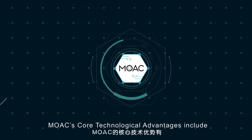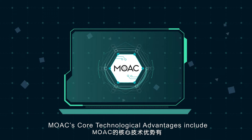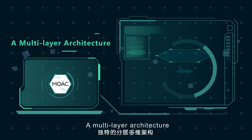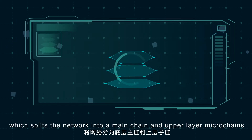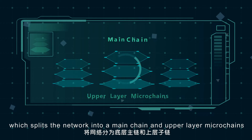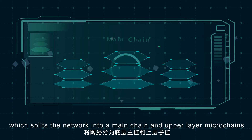The developer team is composed of many senior engineers from Silicon Valley, some from big technology companies such as Amazon, Intel, and Nike. Moac's core technological advantages include a multi-layer architecture, which splits the network into a main chain and upper-layer microchains.